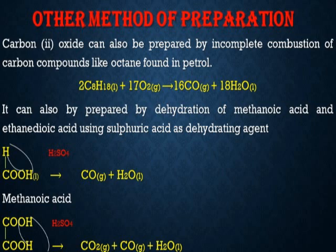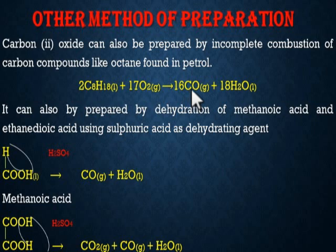Another method of preparing carbon monoxide: carbon monoxide can also be prepared by incomplete combustion of carbon compounds like octane (C₈H₁₈) found in petroleum. When you hear the word combustion, it means burning of a substance in oxygen. Here, two molecules of C₈H₁₈ combined with 17 molecules of oxygen gives 16 molecules of carbon monoxide and 18 molecules of water.